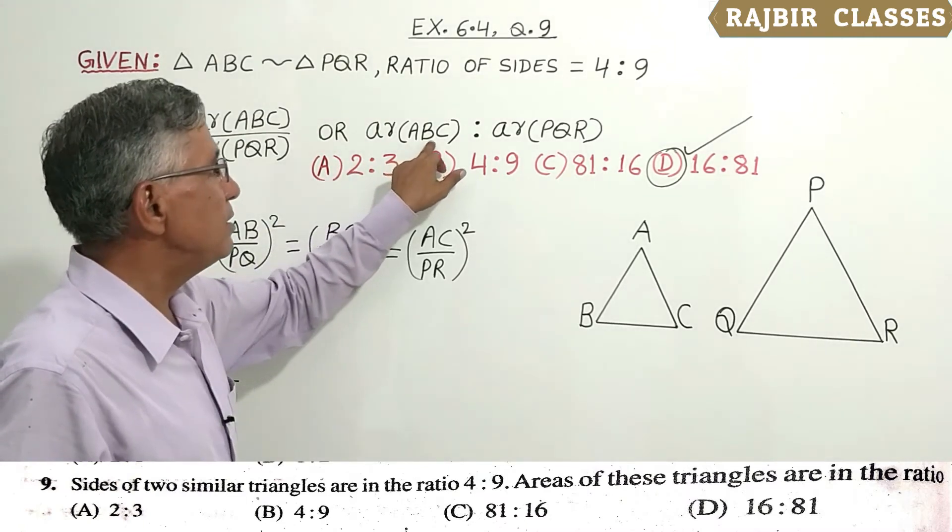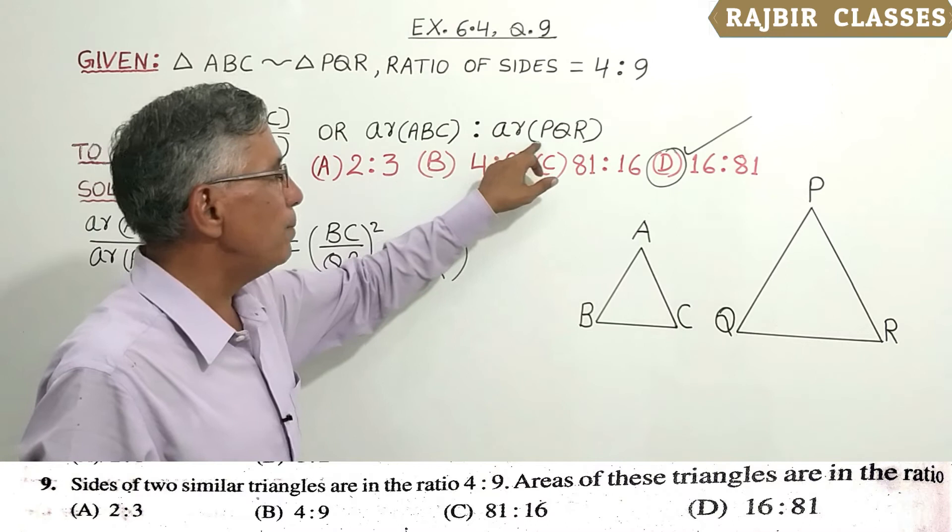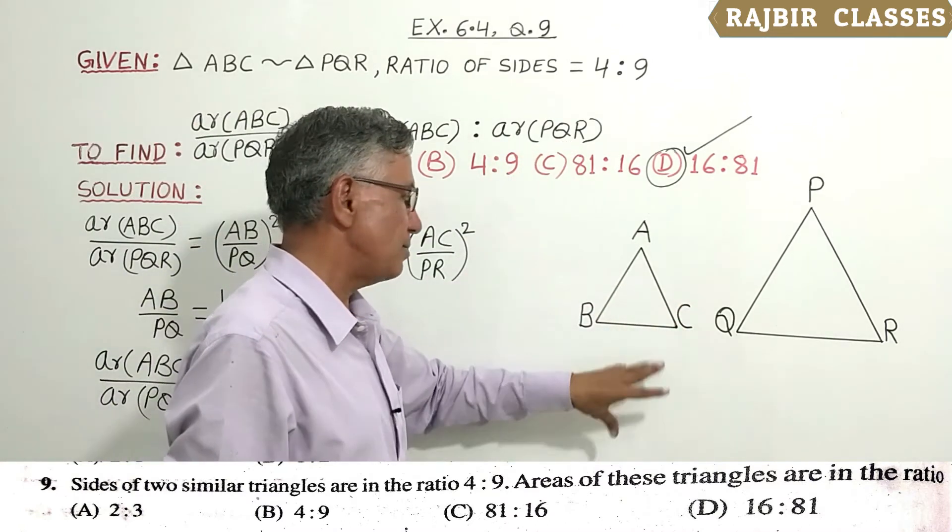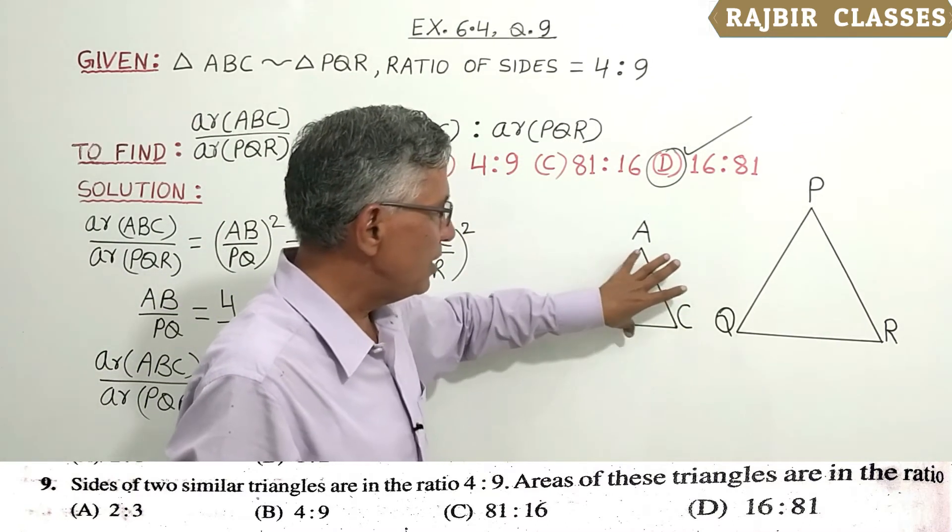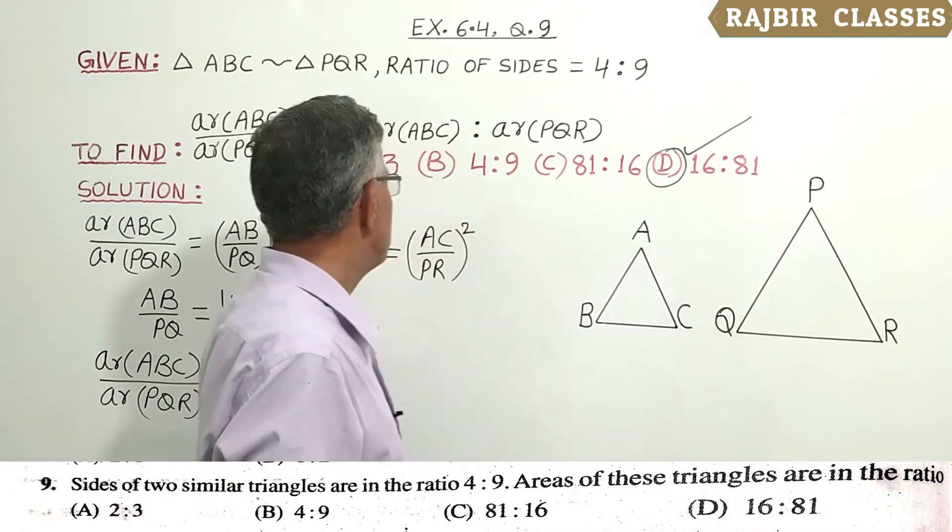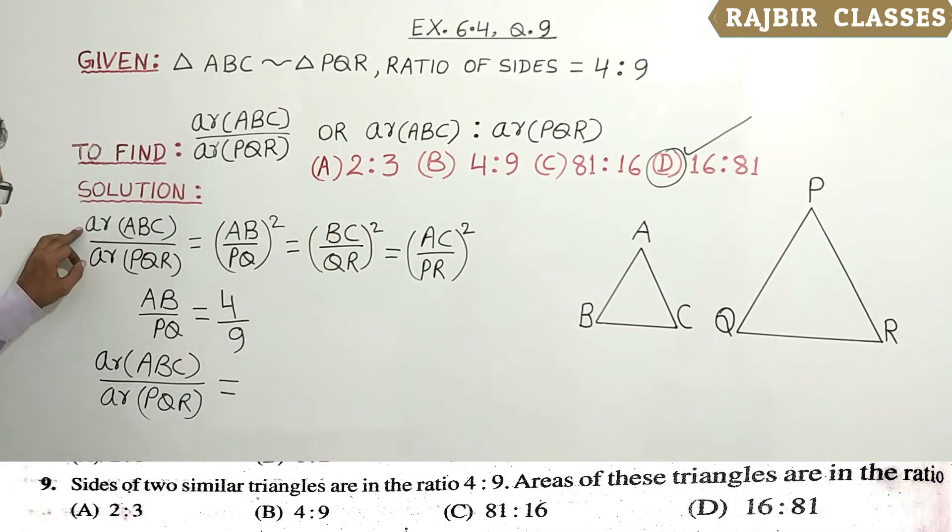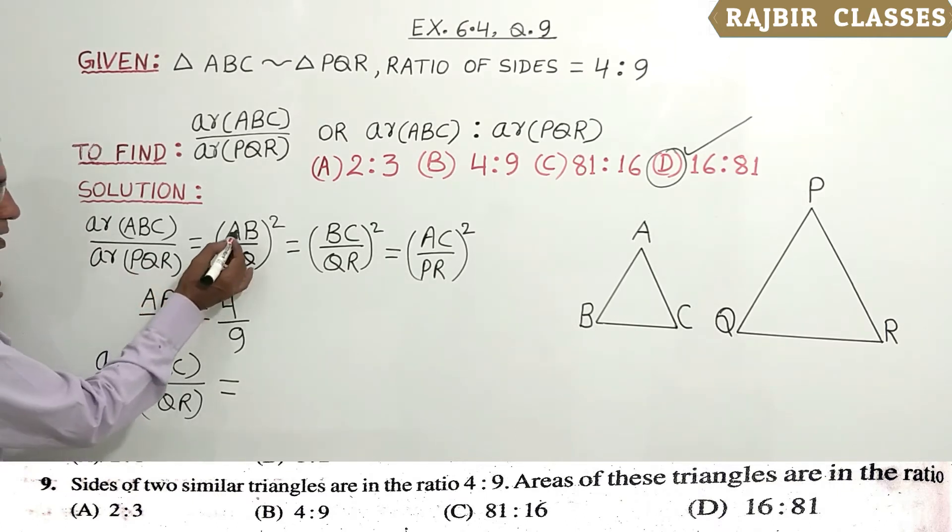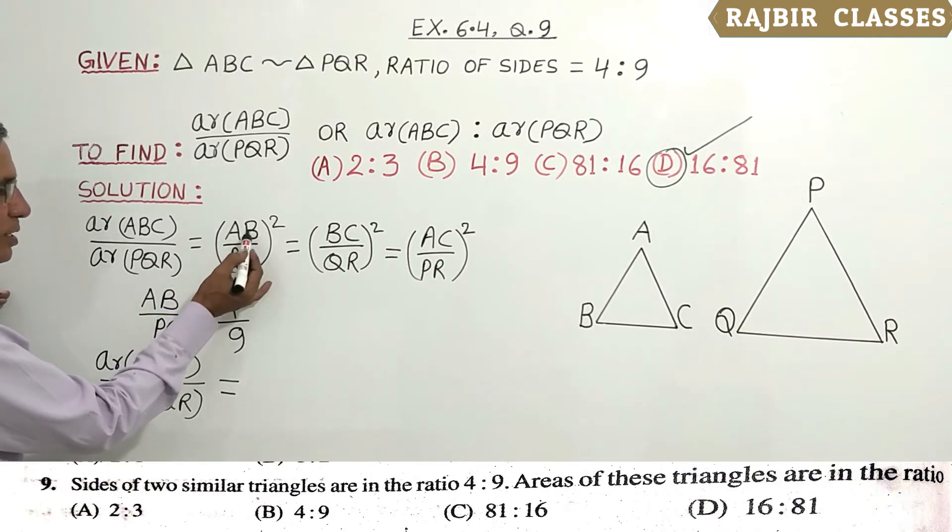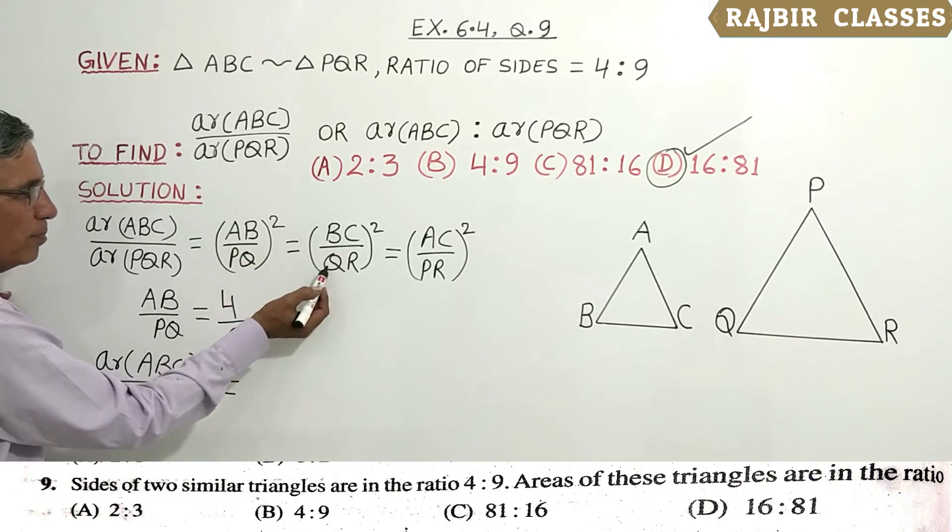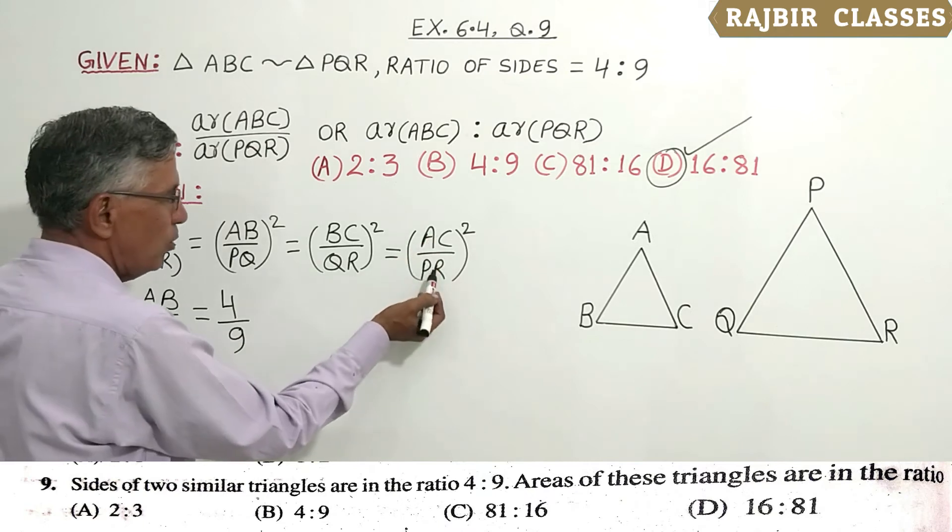Area ABC upon area PQR: In this case, corresponding sides squared - AB upon PQ square, BC upon QR square, and AC upon PR square.